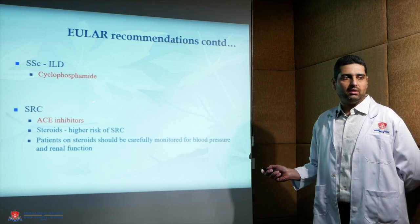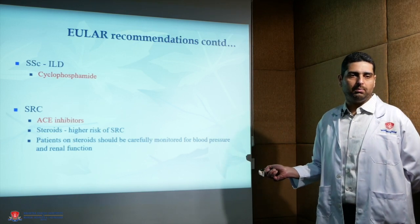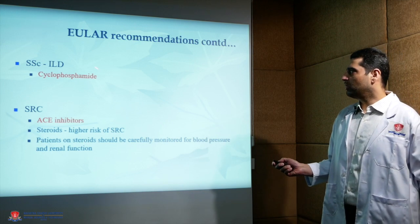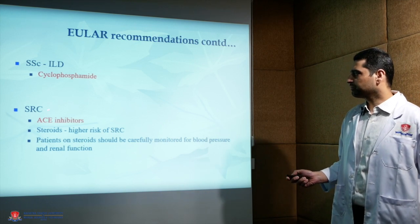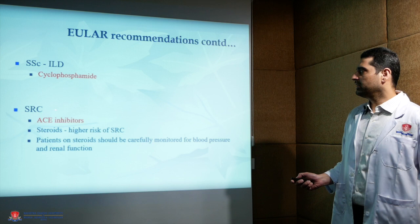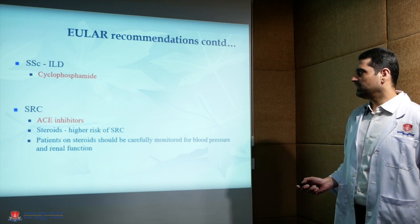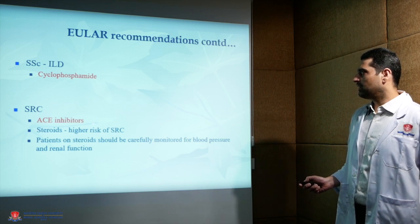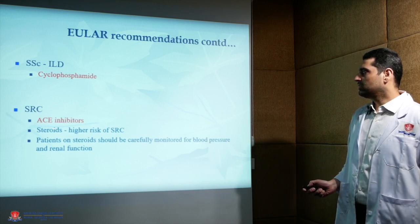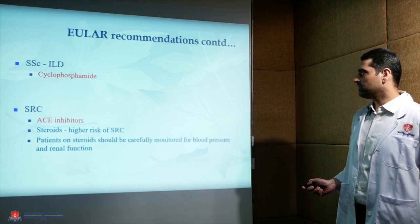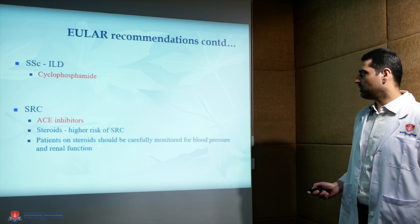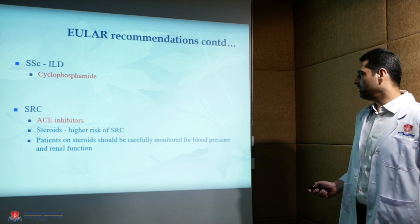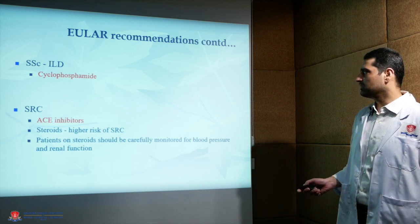Cyclophosphamide is usually given as pulse therapy — monthly pulses of around 0.5 to 1 gram. For scleroderma renal crisis, ACE inhibitors are the drug of choice. Steroids carry a higher risk of developing scleroderma renal crisis, and patients on steroids must be carefully monitored for blood pressure and renal functions.